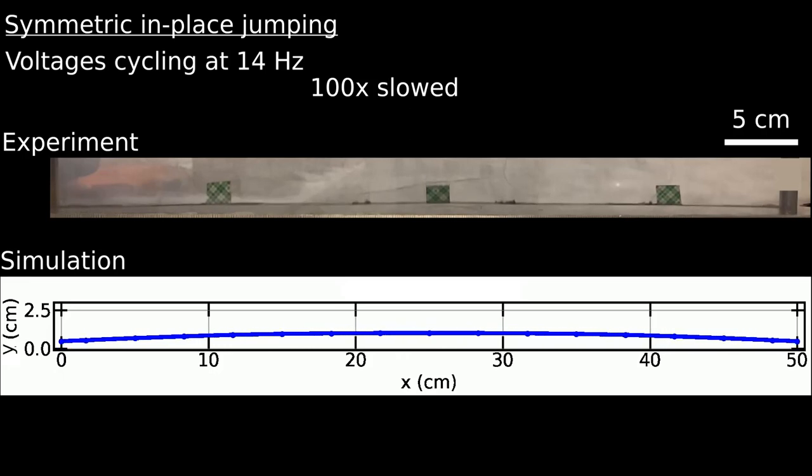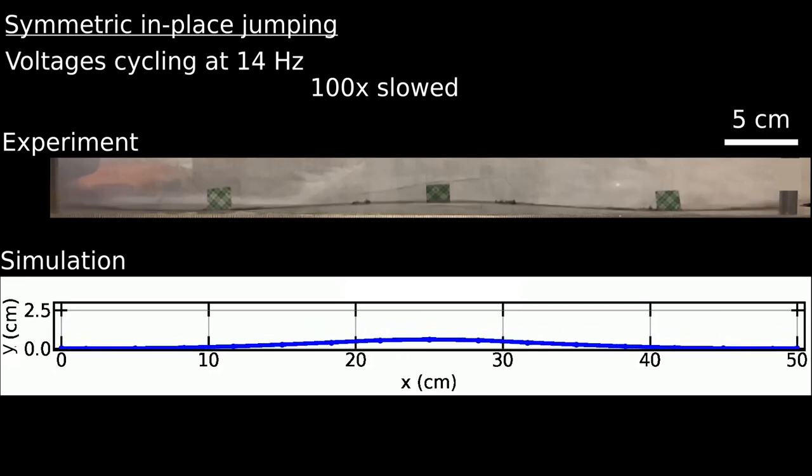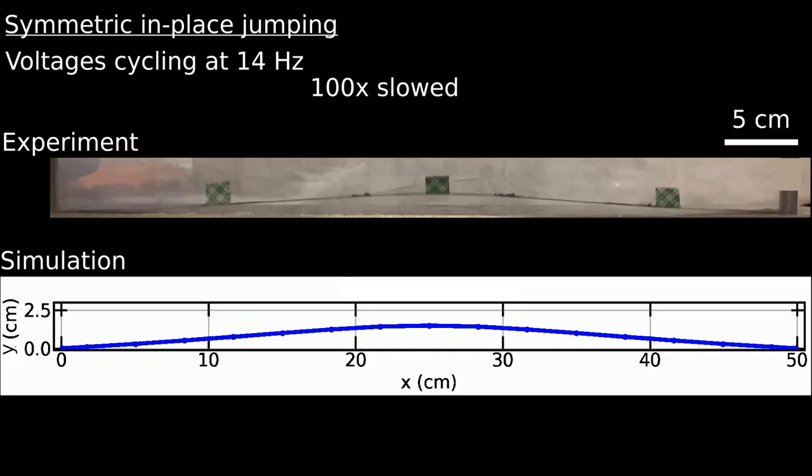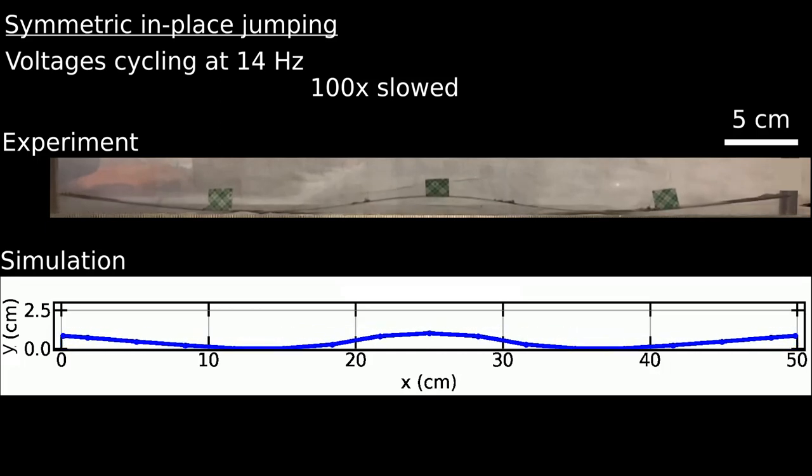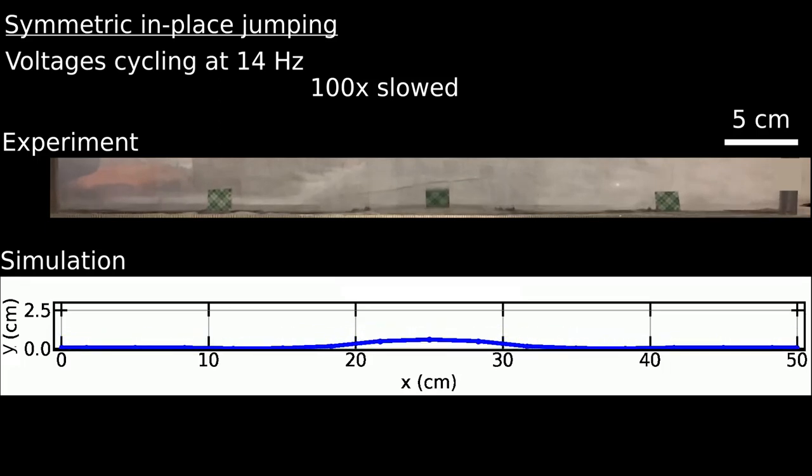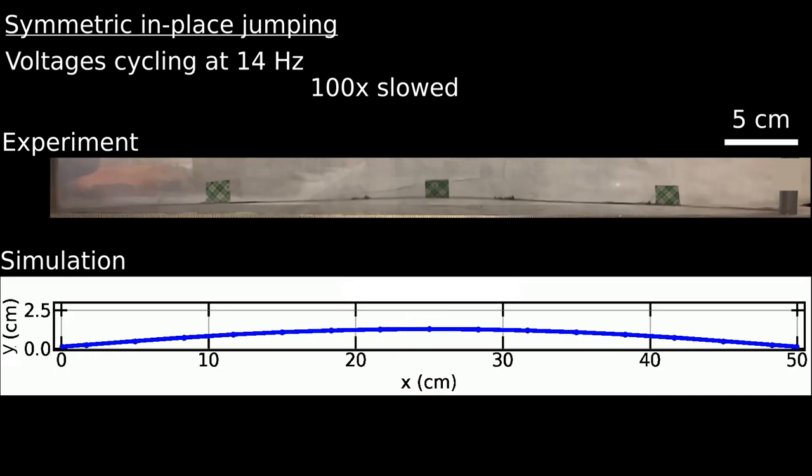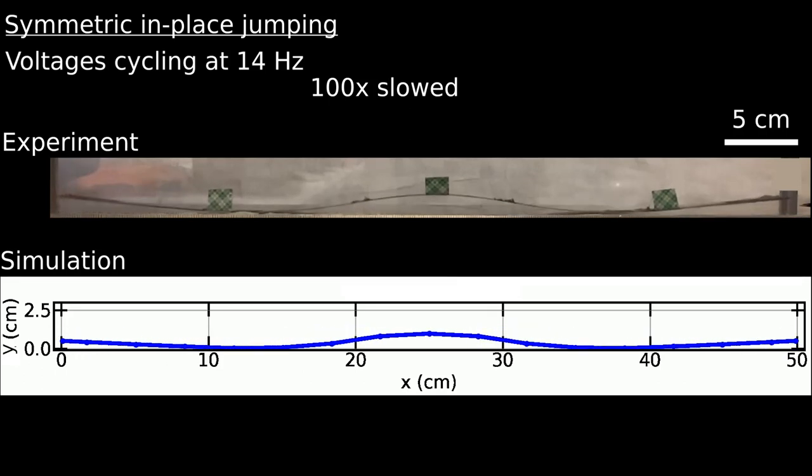The robot performs in-place jumping by cycling the middle three actuators at 14 Hz, again demonstrating close agreement between experiments and simulations. The robot jumps completely off the ground.